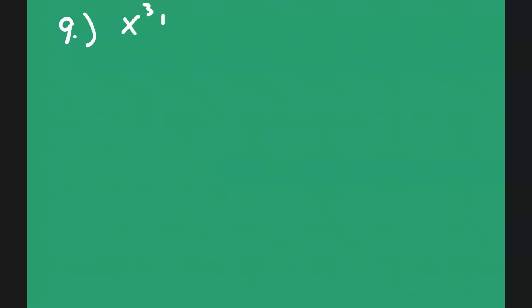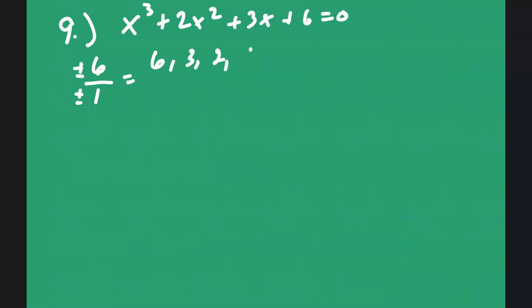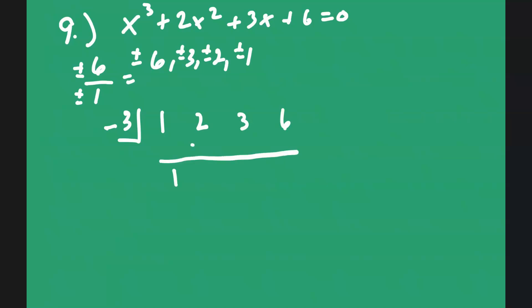For number 9, it says to find all the zeros. What I would do is list all the possible zeros: plus or minus 6, 3, 2, 1. All of them could be positive or negative. Let's try negative 3. Using synthetic division with coefficients 1, 2, 3, 6: bring down 1, negative 3 times 1 is negative 3, negative 1 plus... but negative 3 times 6 is negative 18, so that doesn't work.